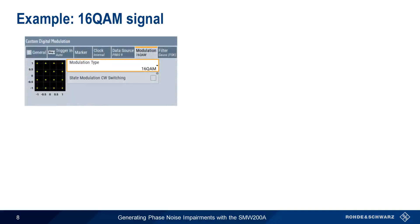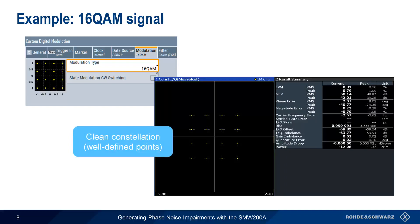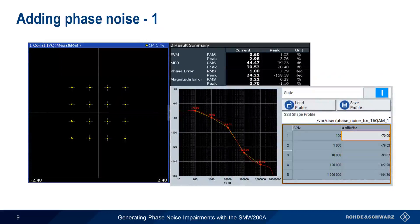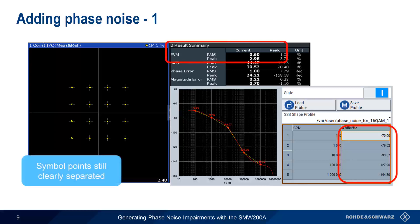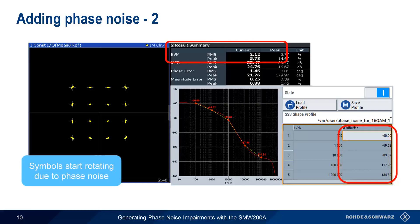Let's look at an example of adding phase noise impairments to a modulated signal. We'll start by using the SMW to generate a 16QAM signal with no added phase noise. When we demodulate the signal using a vector signal analyzer, we see a clean constellation with well-defined points or symbols and very low error vector magnitude — less than 1%. A receiver should have no problems demodulating this signal. We'll start by configuring a relatively small amount of phase noise to be added to the signal. EVM increases slightly, but the symbol points in our 16QAM constellation are still quite distinct and clearly separated.